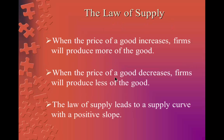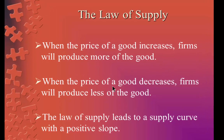The law of supply states the following: when the price of a good increases, firms will produce more of the good. Or, when the price of the good decreases, firms will produce less of the good. Finally, the law of supply leads to a supply curve with a positive slope.